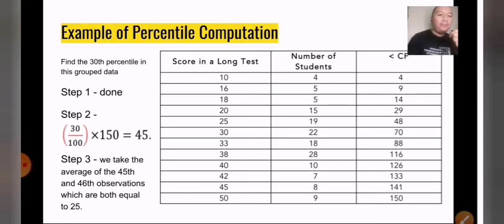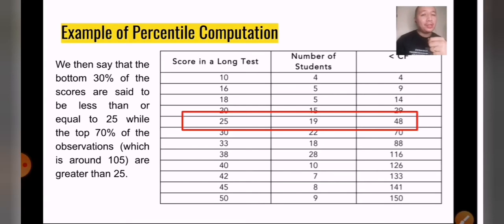The answer is 45. If the answer is 45 and our rule earlier for step 3 is L and L plus 1 observation, so 45 plus 1 is 46. So you need to look for 45 and 46. 45 and 46 both scored 25 in the exam. So what we can make out of this is that we can say that the bottom 30 percent of the scores are less than or equal to 25. So imagine that 30 percent of your population are below 25, while the top 70 percent are above 25.